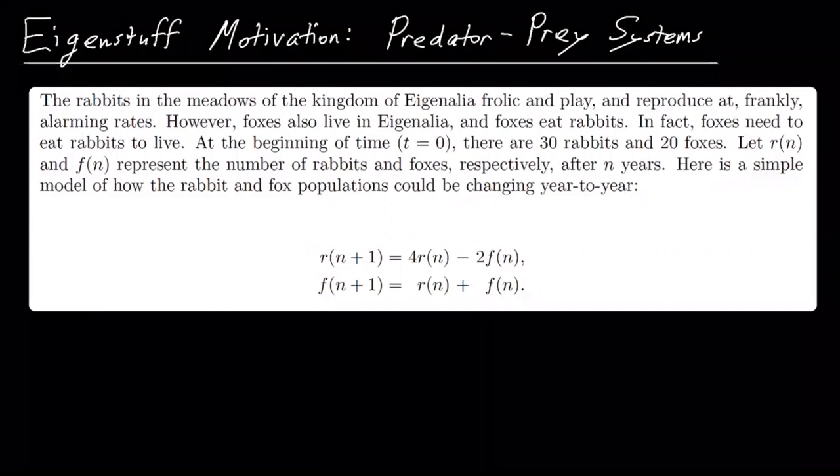So take a second and read this text here that I've put, you could pause it for a moment if you want. Point is we've got, we're in Eigenalia, we've got rabbits living in the meadows, they reproduce quickly, we have foxes that eat rabbits, they need to eat rabbits to live. And so we start with 30 rabbits, 20 foxes.